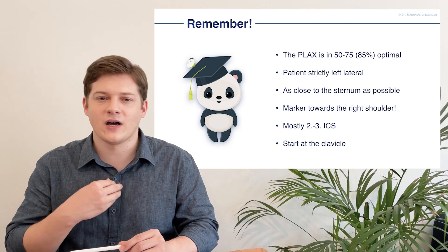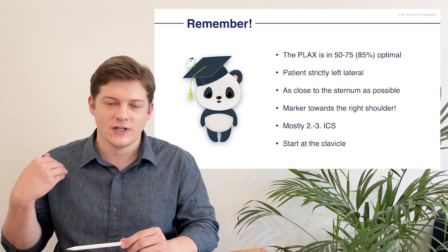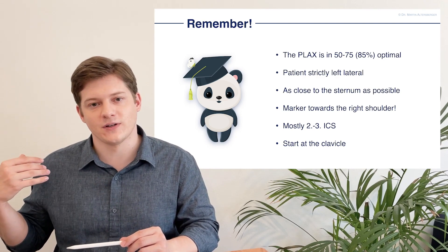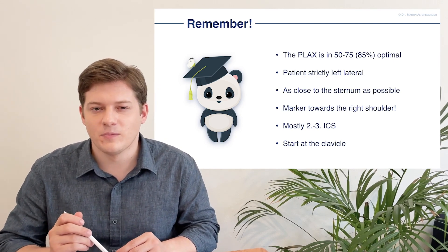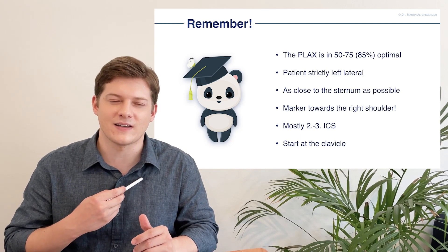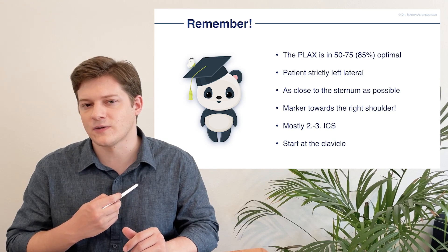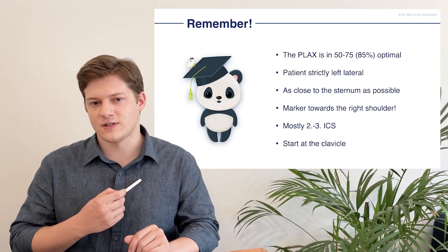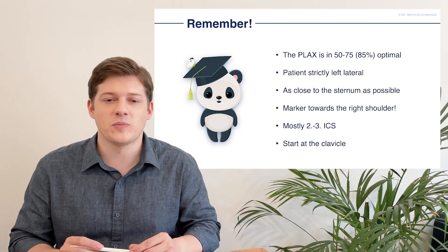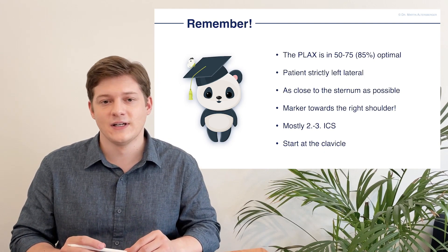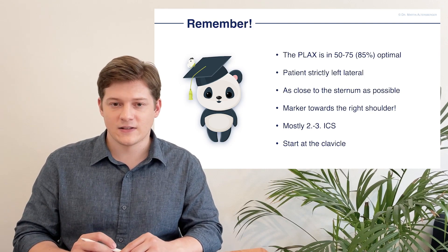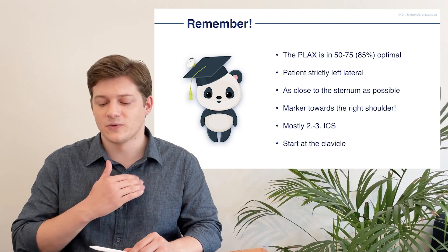The marker always points to the right shoulder — don't point it cranially, don't point it to the lateral side, really to the right shoulder. Mostly the view you want to acquire is located between the second to probably the third intercostal space. Don't be discouraged if it's sometimes in the fifth or even sixth intercostal space — that can simply happen and is very different among patients. Once more, start really at the clavicle; if you do that the parasternal view is relatively easy to acquire.